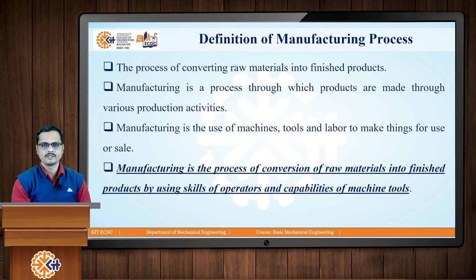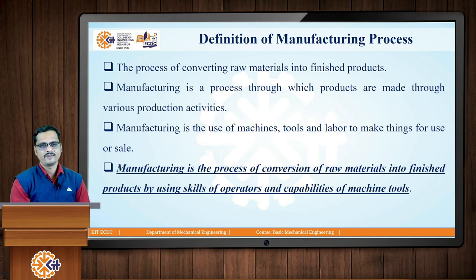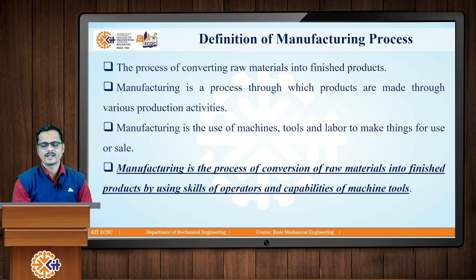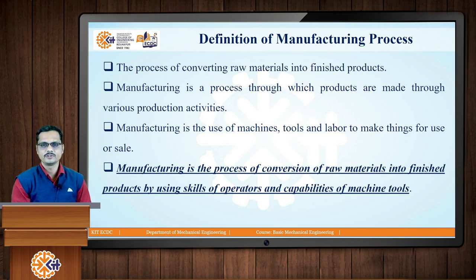Various definitions of manufacturing have been given here. The first definition is that the manufacturing process is the process of converting raw materials into finished products — input is raw material and output may be semi-finished or finished product. Manufacturing is also a process through which products are made through various production activities, using a number of techniques to process the input and get the desired output. Manufacturing is also the use of machines, tools, and labor to make things for use or sale.